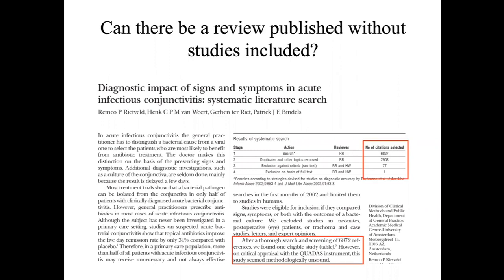It is possible that somebody commenced a study — there are many such examples where, following ethics approval, the study was started, the sample size requirement could never be met, very few patients came forward, leaving just a very small study. This type of termination of a planned systematic review is similar to a small study that results from failure to recruit the required sample size.